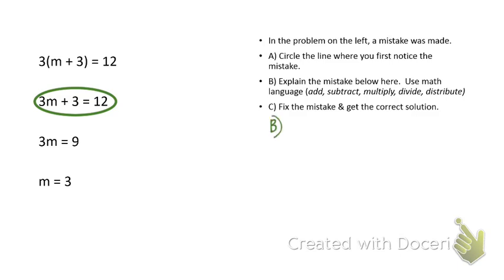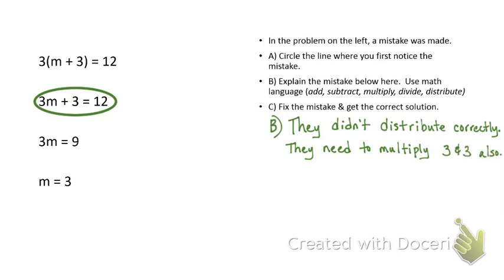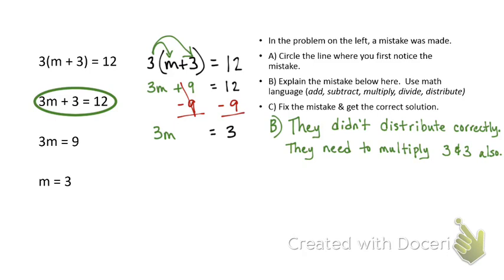The mistake is that they didn't distribute correctly. They needed to multiply 3 and 3 in the parentheses. So let's make that correction over here on the right. I'm going to rewrite the problem and then I'm going to distribute correctly. 3 times m would be 3m. And then distribute the 3 times the positive 3 and that would get plus 9 is equal to 12. Now I'm going to subtract 9 from both sides because I need to isolate my variable. And then I'm going to get 3m is equal to 3. And then I'm going to divide by 3. And I would get m equals 1. And that would be my solution. Does that make sense? I hope so.